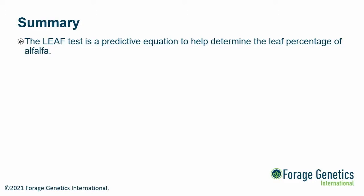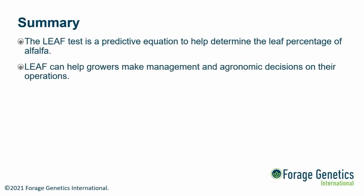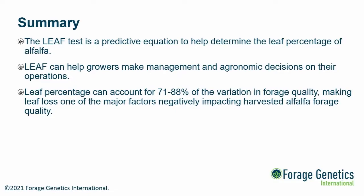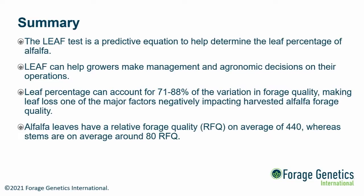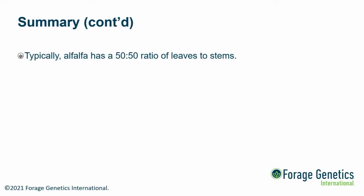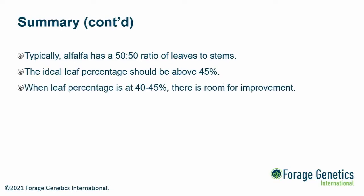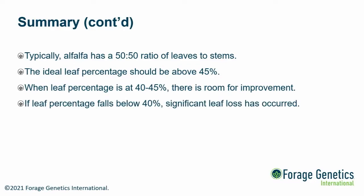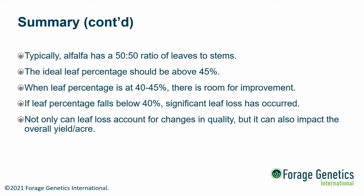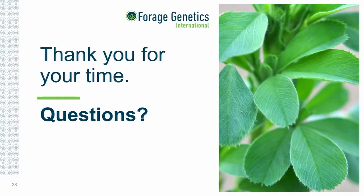In summary: the LEAF test is a predictive equation to help determine leaf percentage of alfalfa in a ground sample and help growers make management and agronomic decisions. Leaf percentage can account for 71 to 88% of the variation in forage quality. Leaves have an average RFQ of about 440, whereas stems are around 80. Typically alfalfa has a 50-50 ratio of leaves to stems. Ideally you should have at least 45% leaves in your sample; 40–45% suggests room for improvement; below 40% indicates significant loss requiring action. Leaf loss affects both quality and overall yield.